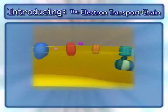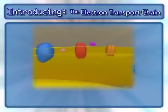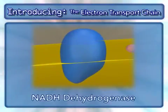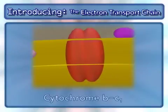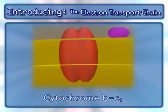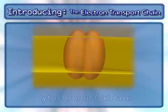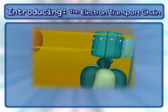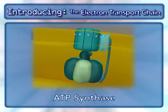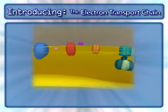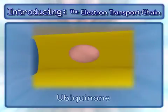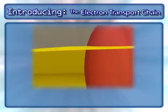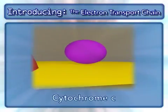The following complexes are found in the electron transport chain: NADH dehydrogenase, cytochrome BC1, cytochrome oxidase, and the complex that makes ATP, ATP synthase. In addition to these complexes, two mobile carriers are also involved: ubiquinone and cytochrome C.